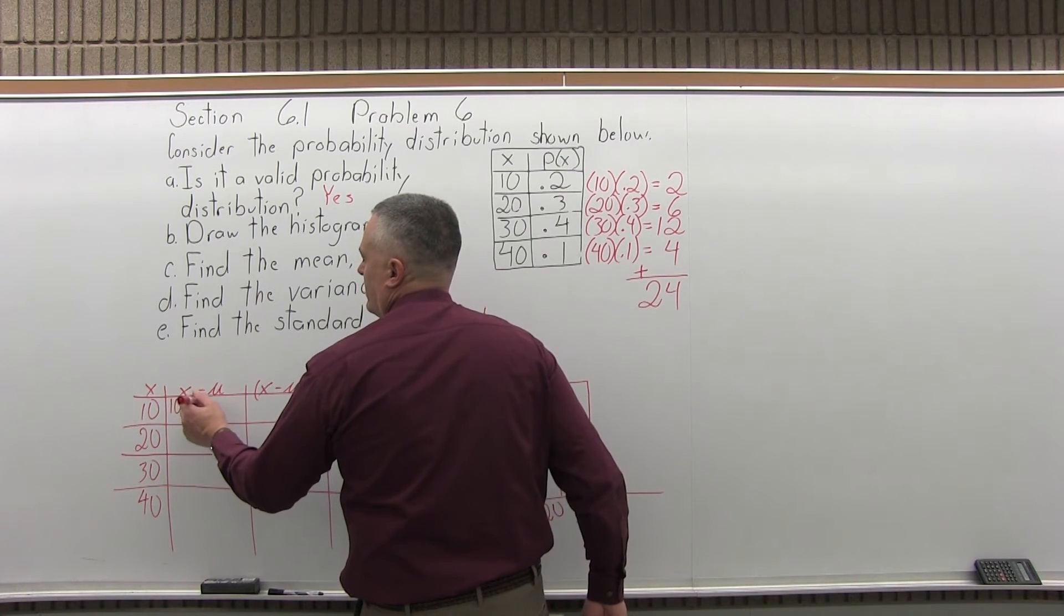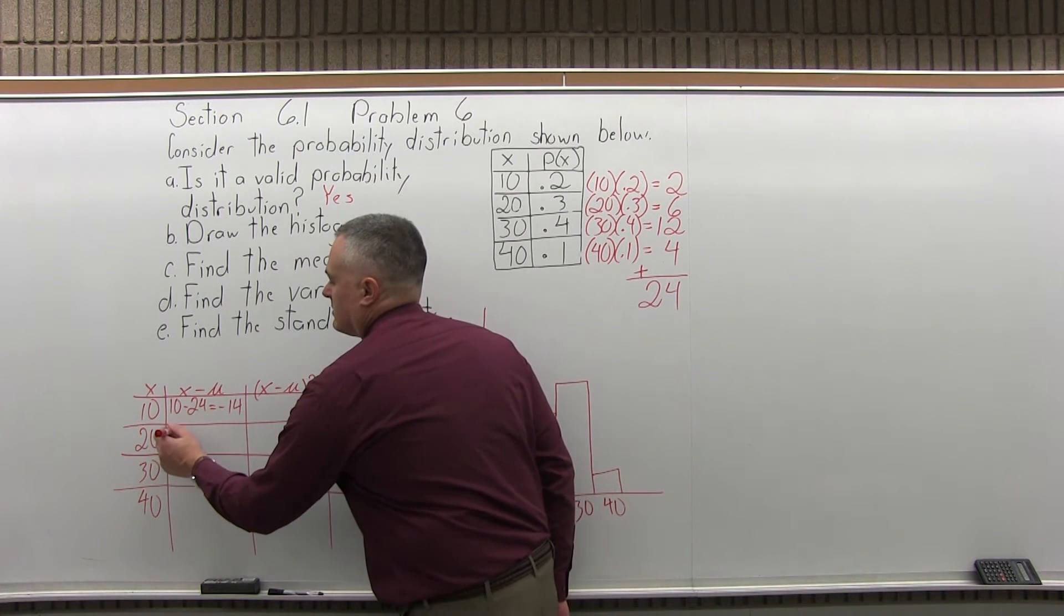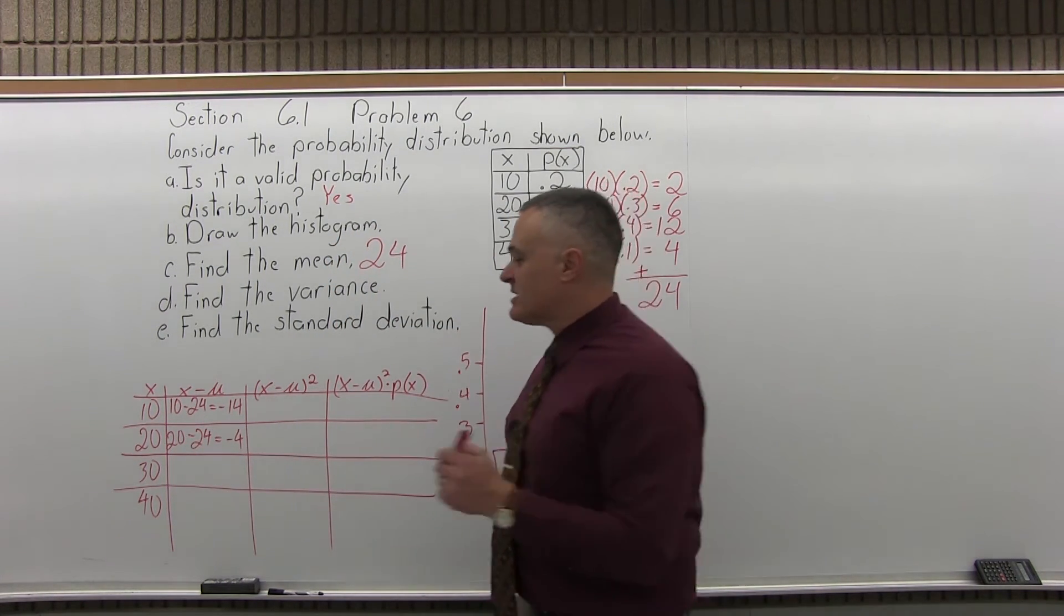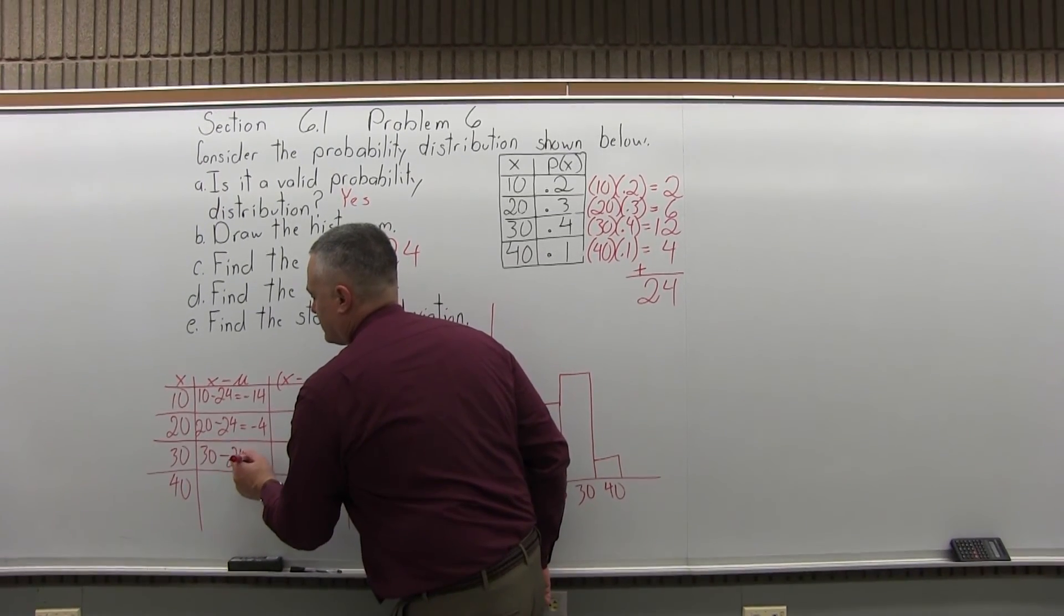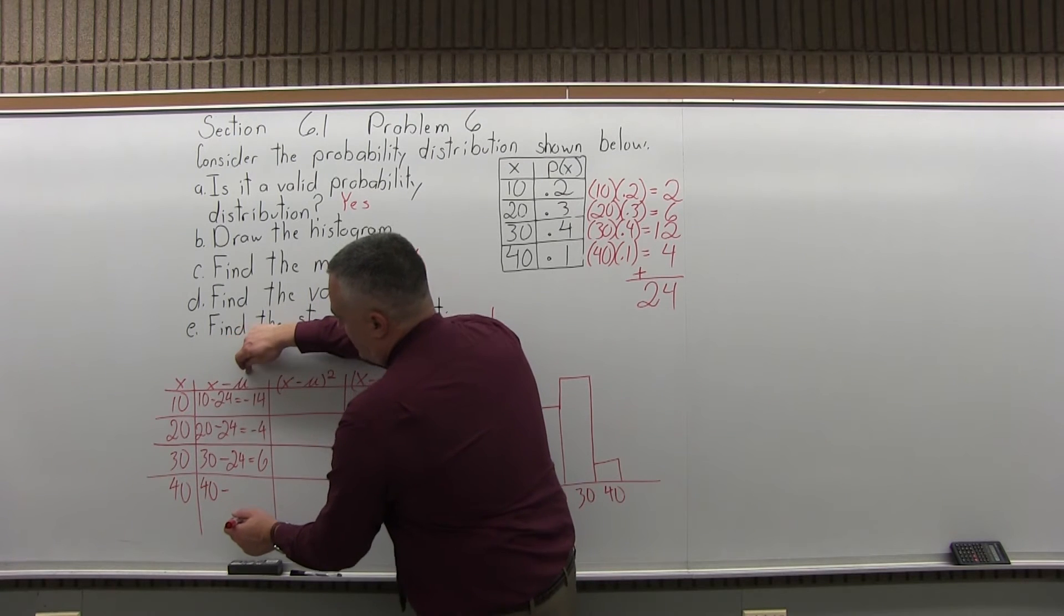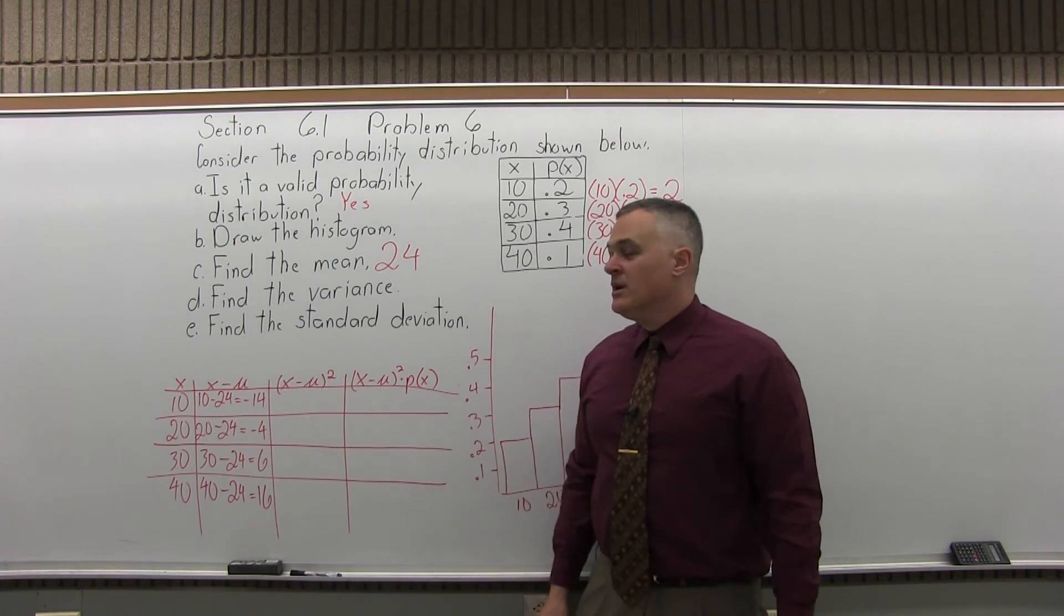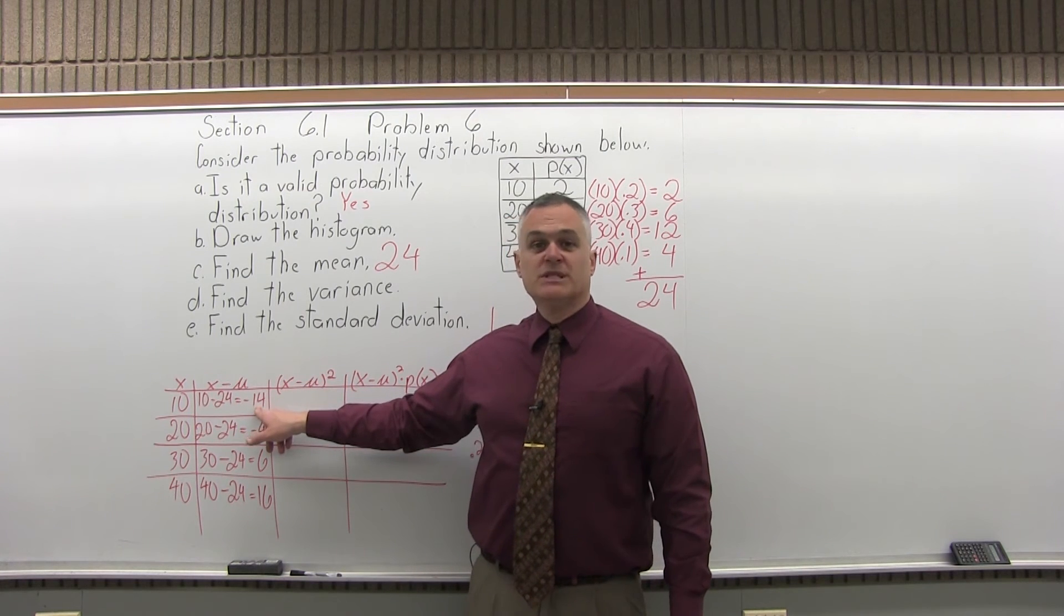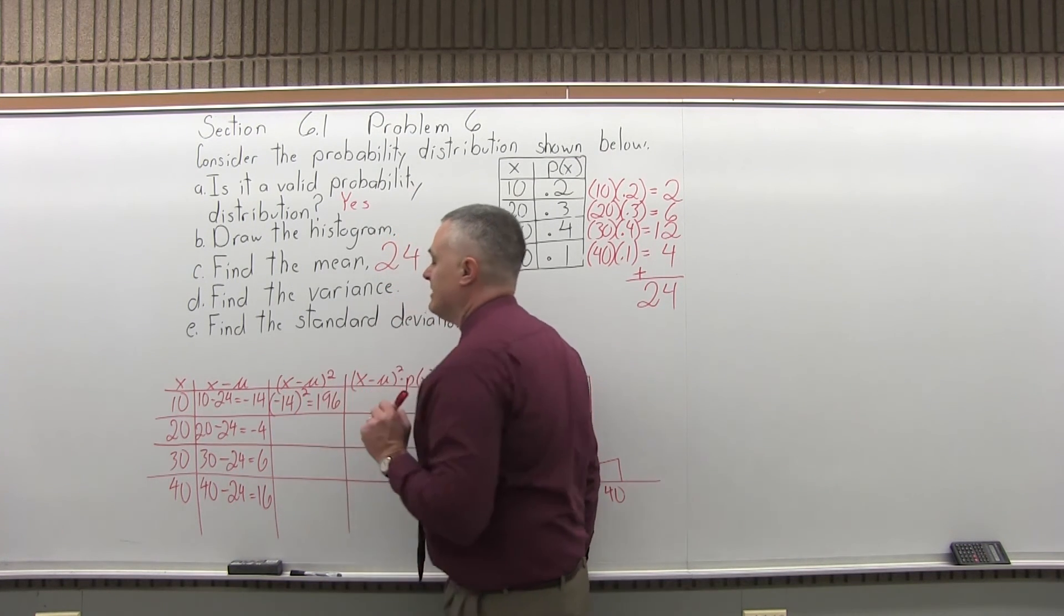And now the next column, x minus μ. So the value of x in the row that you're in minus μ, the answer for the mean, which in this problem is 24. So in the top row, x is 10 minus μ is 24, 10 minus 24 is negative 14. In the next row, x minus μ, now x is 20 in this row, minus μ is still 24, 20 minus 24 is negative 4. And the next row down, x is 30 minus μ, again μ is still 24, 30 minus 24 is positive 6. And in the bottom row, x is now 40 minus μ, still 24, 40 minus 24 is positive 16.